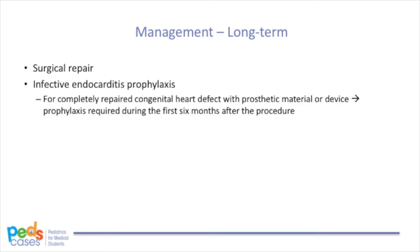Josh will require infective endocarditis prophylaxis before dental, surgical, or other invasive procedures, as his Tetralogy of Fallot and surgical repair puts him at risk for bacteria adhering to his cardiac endothelium. According to the American Heart Association and Canadian Dental Association, infective endocarditis prophylaxis is required for patients with: A. Prosthetic valve or material. B. History of infective endocarditis. Or C. Specific types of congenital heart disease, including unrepaired or incompletely repaired cyanotic congenital heart disease; completely repaired congenital heart defect with prosthetic material or device during the first six months after the procedure; or any repaired congenital heart defect with residual defect at or adjacent to the site of a prosthetic patch or device. Thus, children with Tetralogy of Fallot require infective endocarditis prophylaxis preoperatively and for at least the first six months postoperatively. In some cases, the prophylaxis is required lifelong.